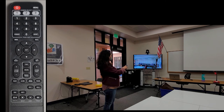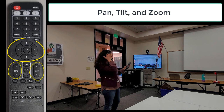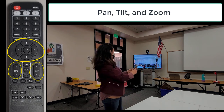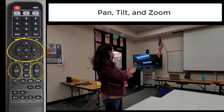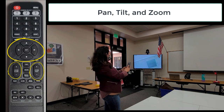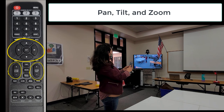Now I'm going to combine pan, tilt, and zoom to find a specific place in the room. I'm going to focus on a whiteboard in the back of the room. I'm pressing the pan buttons and tilting using the fast controls — I went too far, so let me tilt that down.